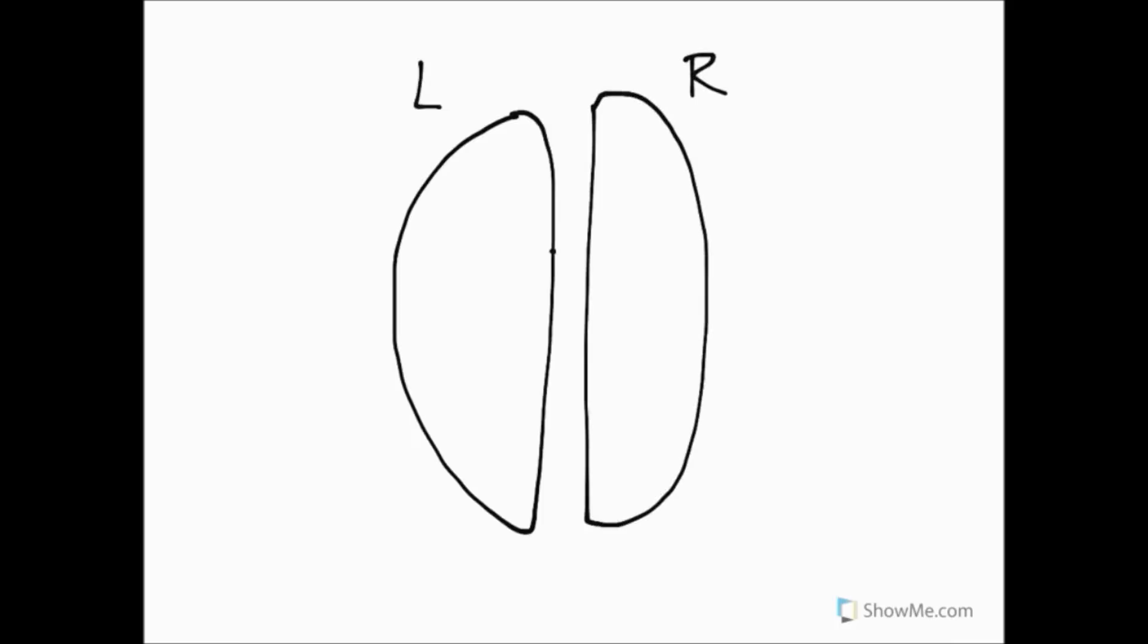We've got a left and a right. We can join them together with the corpus callosum and add this groove that runs down the midline, which is known as the longitudinal fissure.